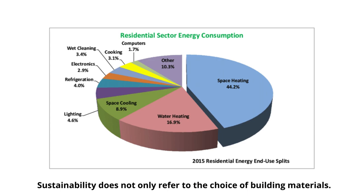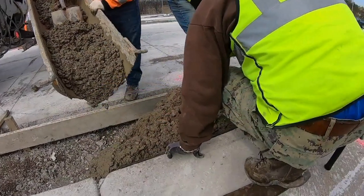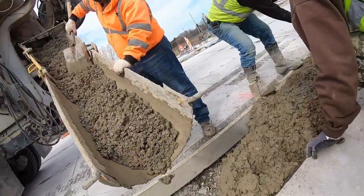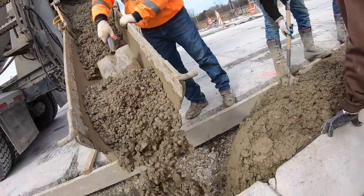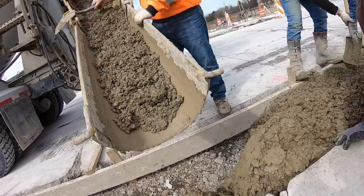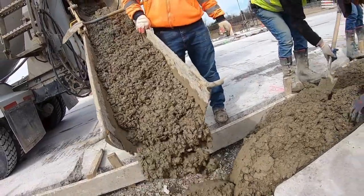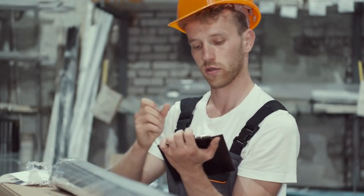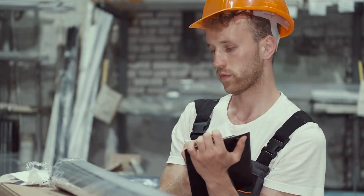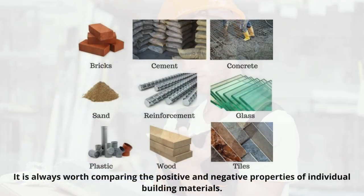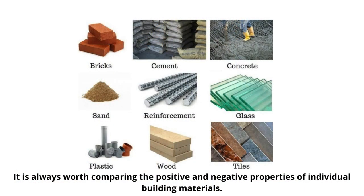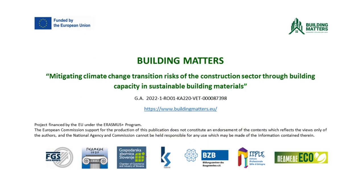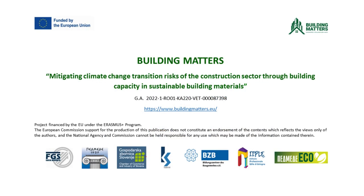Sustainability does not only refer to the choice of building materials. Nevertheless, there is a considerable difference between using brick, concrete, or wood. So-called ancillary building materials such as insulation, floor and wall coverings, or sanitary objects should also not be neglected from a sustainability perspective. It is always worth comparing the positive and negative properties of individual building materials.